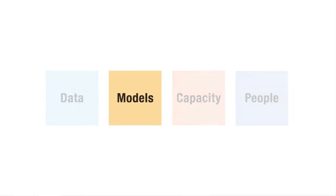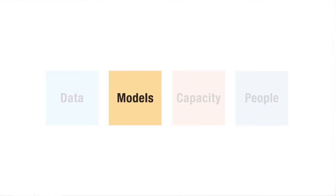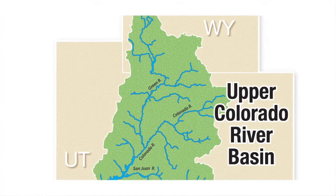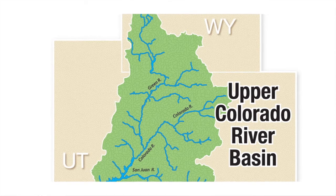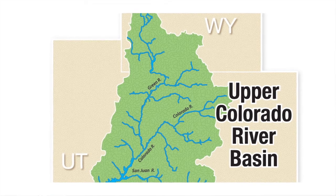The CI Water project is developing computer models that can process these data and generate forecasts of water availability. CI Water is working on different types of computer models to help us understand how water is likely to behave in certain areas, such as the Colorado River Basin, and also how factors such as climate change and population growth are likely to affect water systems.